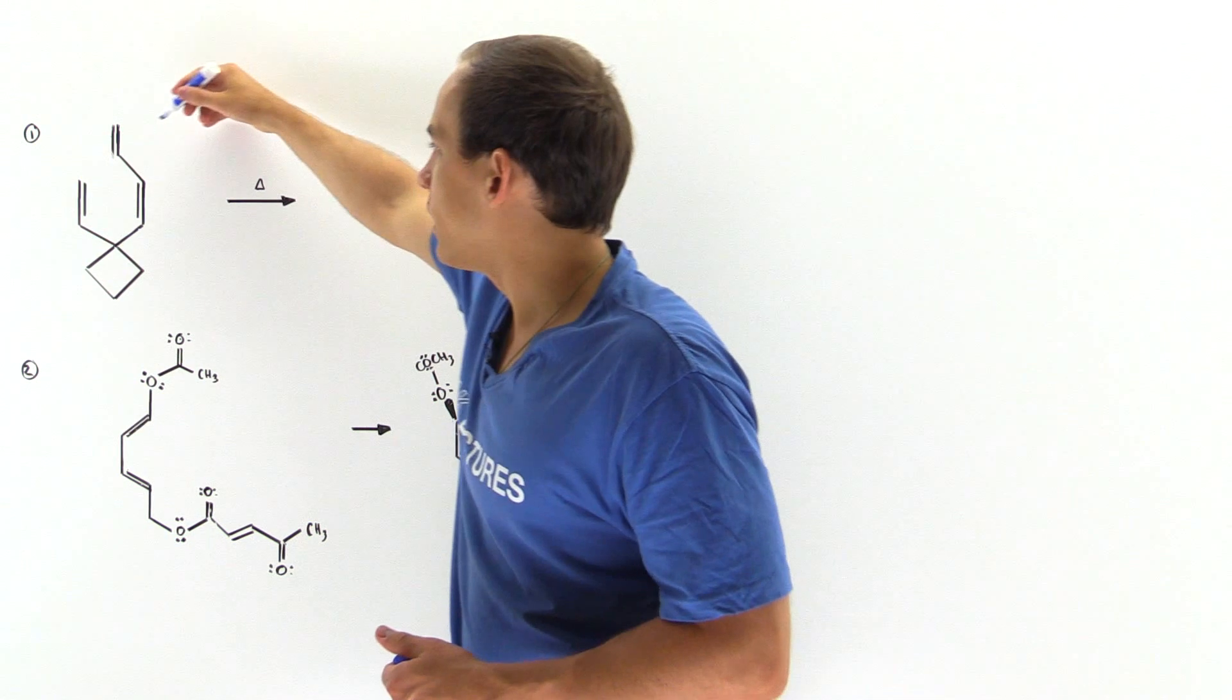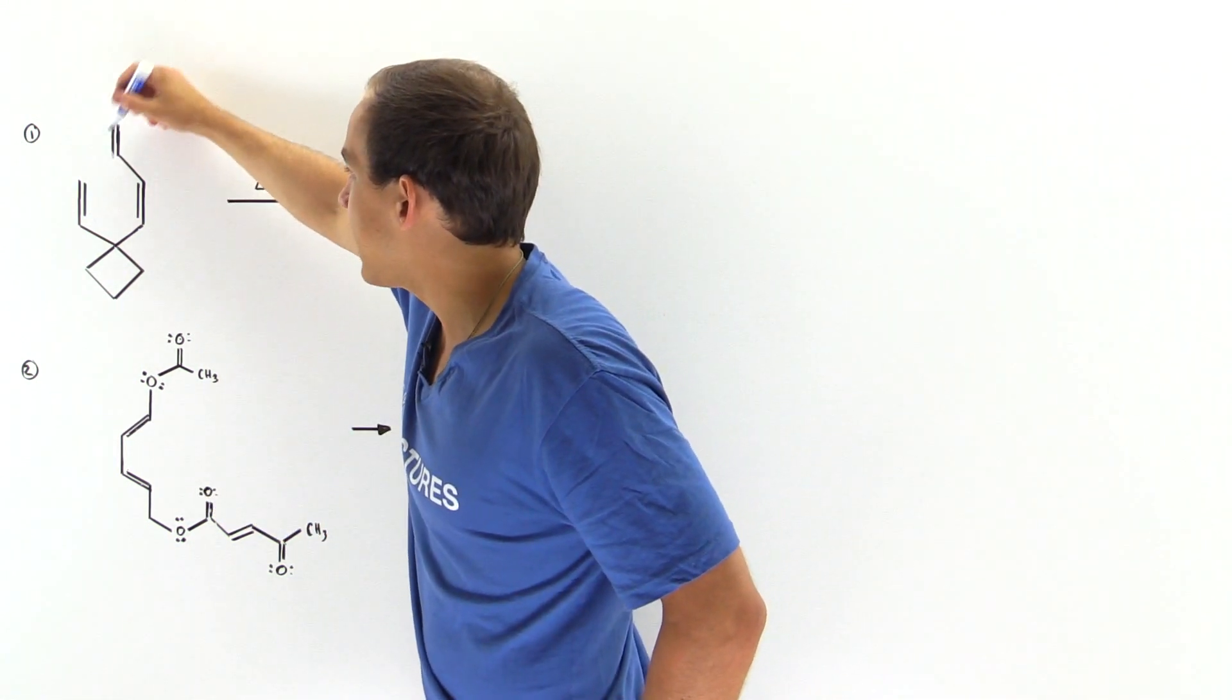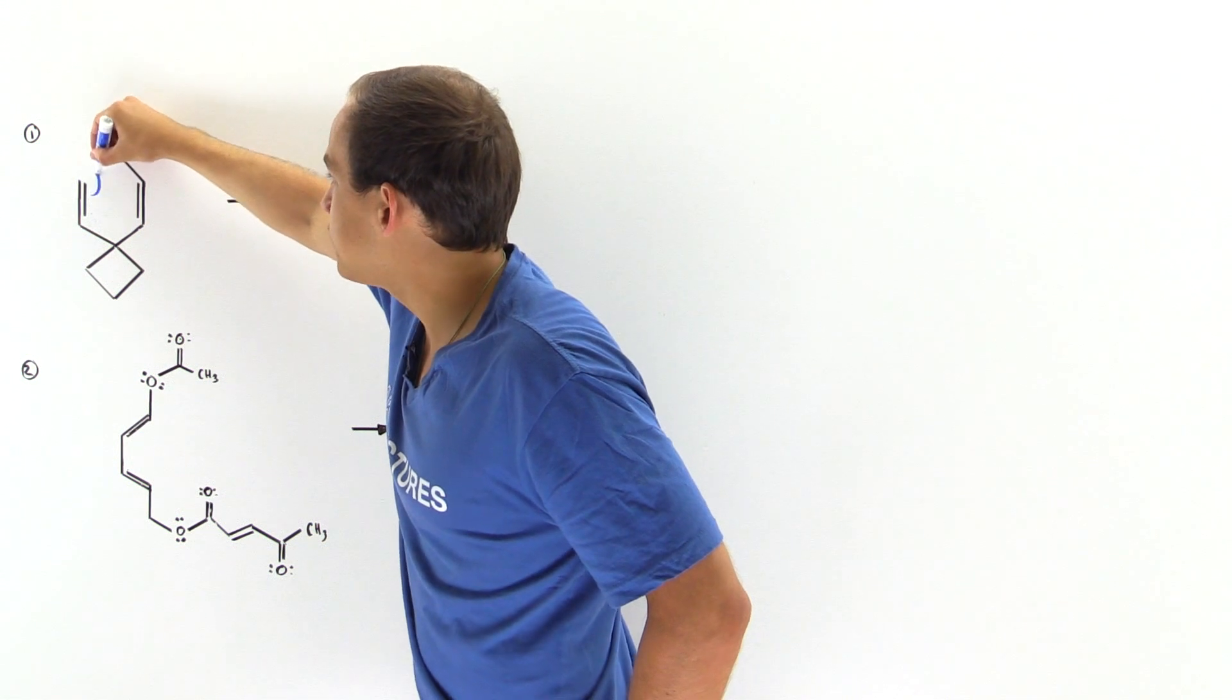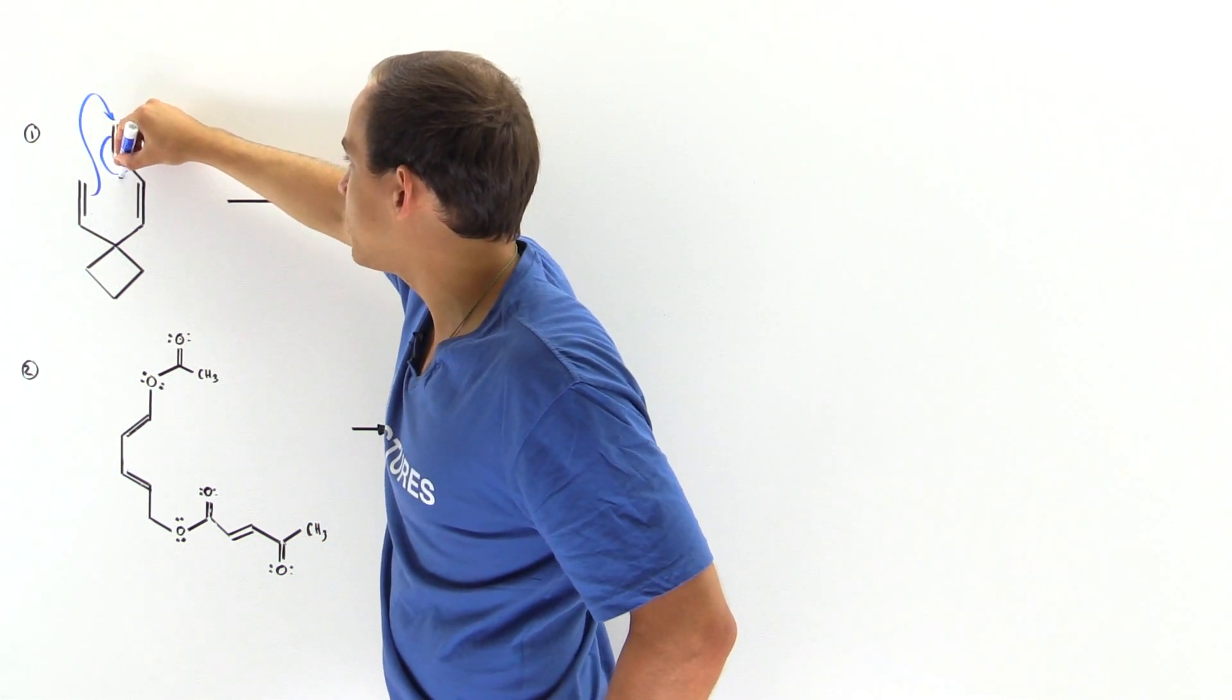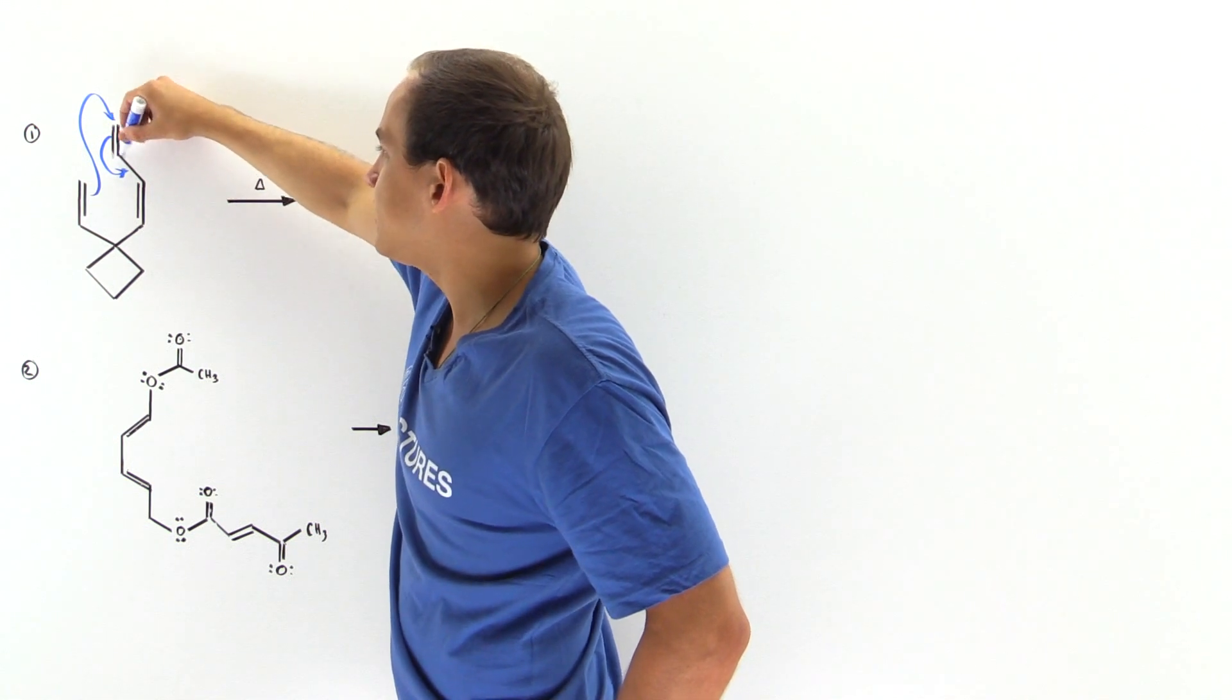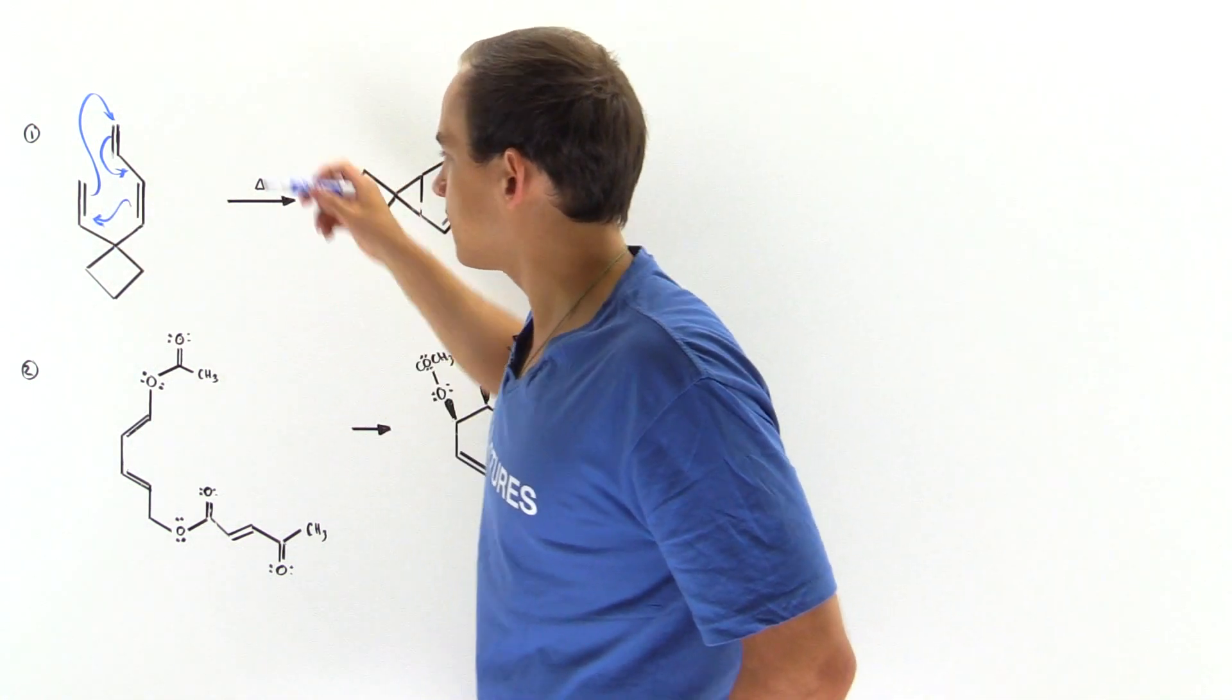The following rearrangement of electrons takes place. We have this pi bond that attacks this. This pi bond rearranges to form a bond here, a double bond. And this attacks this carbon here.